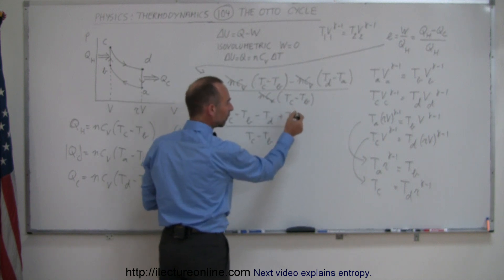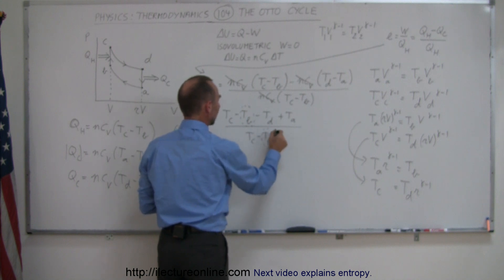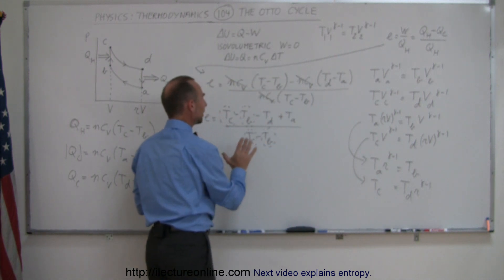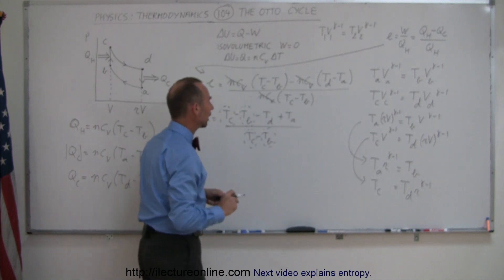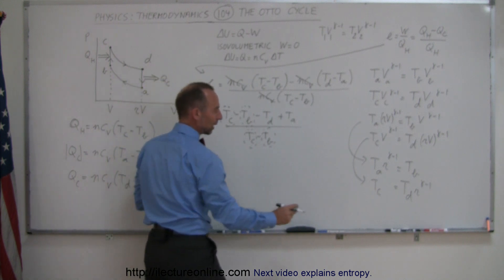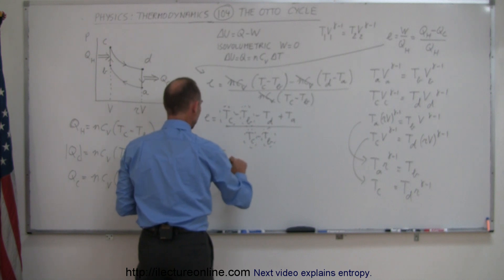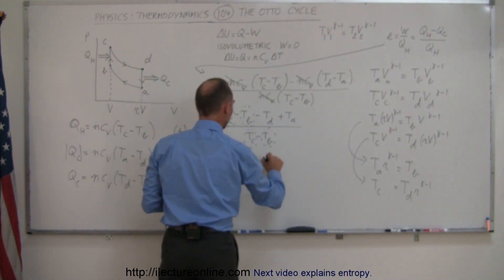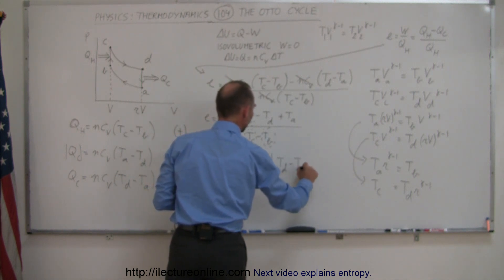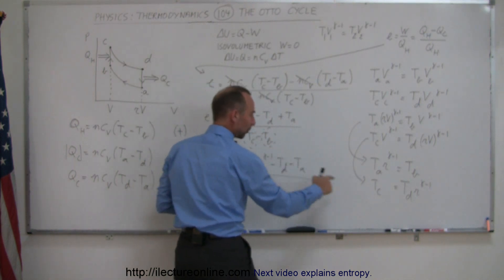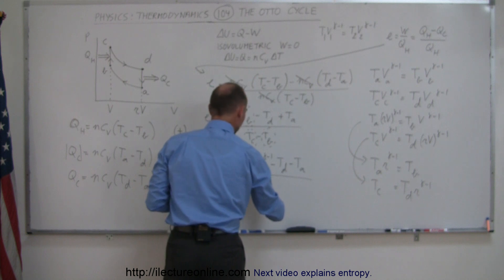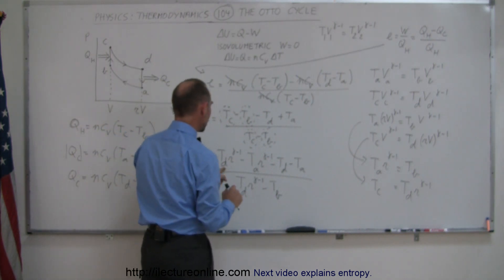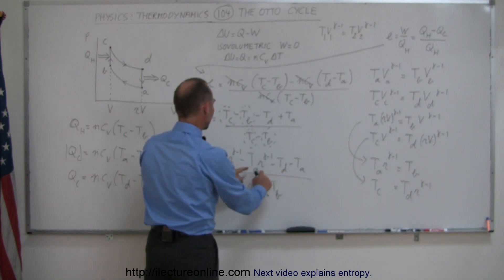We're going to replace T_B and T_C in the efficiency equation with these expressions, reducing everything to T_D and T_A. So E equals: replacing T_C with T_D times R to the (gamma minus 1), and T_B with T_A times R to the (gamma minus 1), minus T_D minus T_A, all divided by T_D times R to the (gamma minus 1) minus T_A times R to the (gamma minus 1). We can then pair up the T_D terms and the T_A terms and factor accordingly.